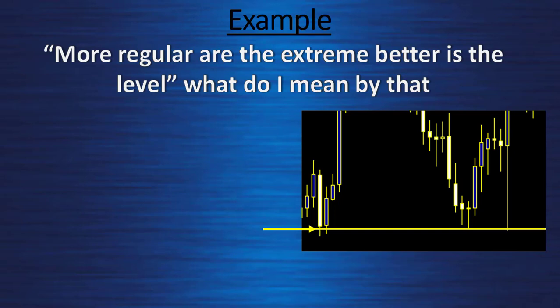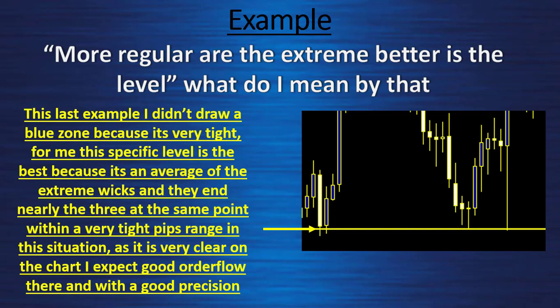Last example: I didn't draw a blue zone because it is very tight. For me this specific level is the best because it is an average of the extreme wicks and they end nearly at the same point, within a very tight range of pips. In this situation, as it is very clear on the chart, I expect good order flow there with good precision, so the next rejection should be nice.